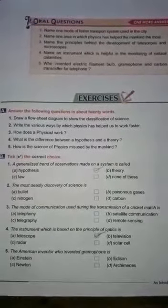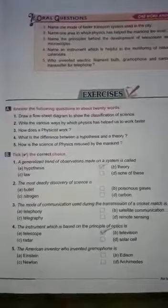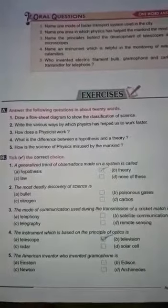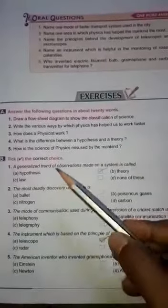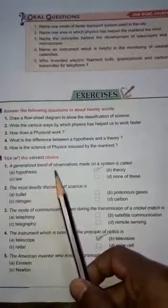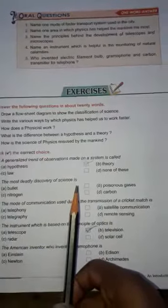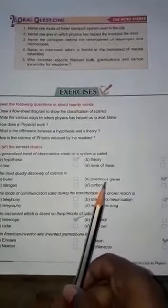Children, now we will discuss the short questions of chapter B. Take the correct choice. A generalized trend of observation made on a system is called a hypothesis. The most deadly discovery of science is poisonous gases.